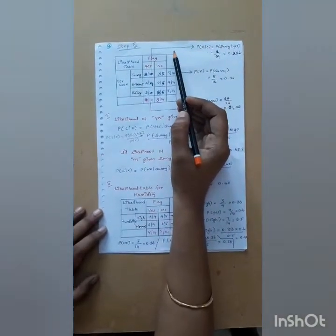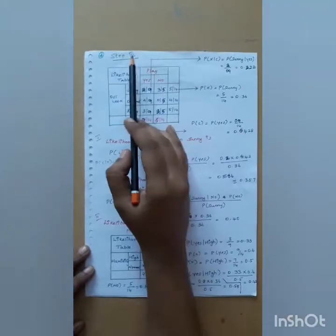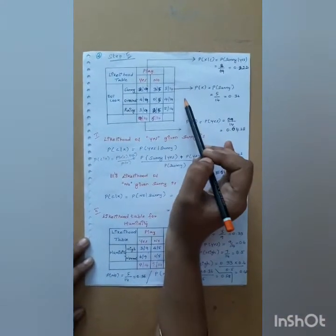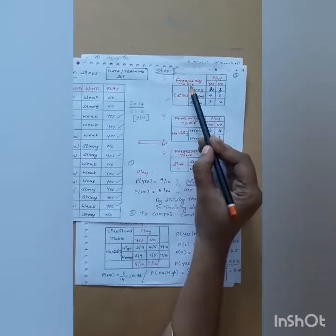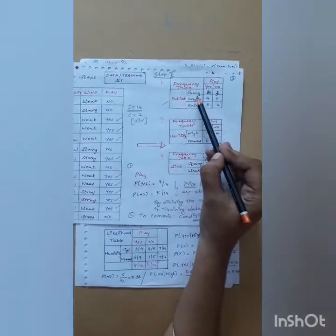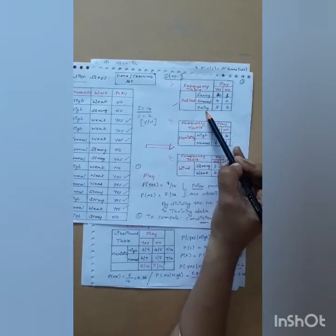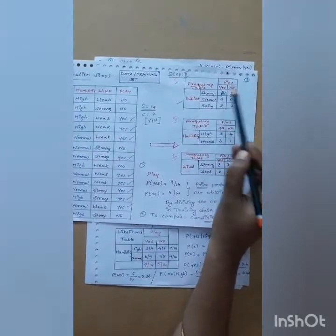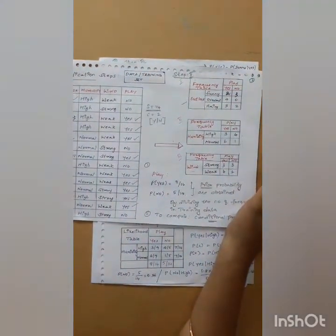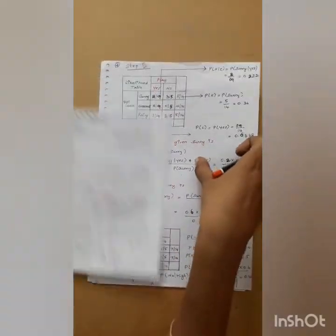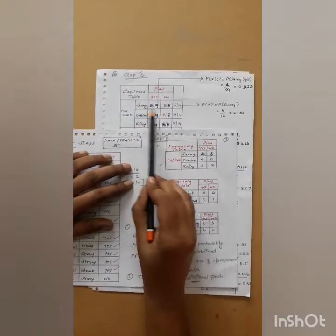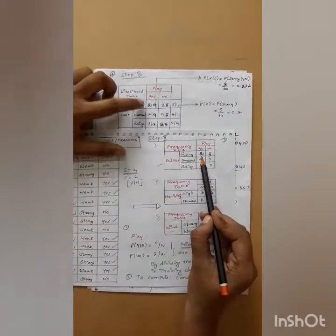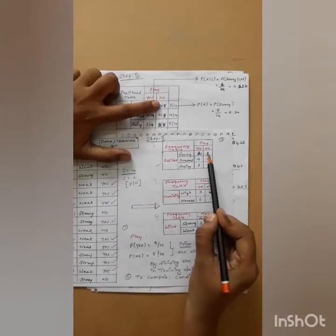In the previous step we computed the frequency table, so in step 3 we are going to compute the likelihood table. For the frequency table, outlook has sunny, overcast, and rainy. We need to compute the likelihood — how many yes and how many no. For sunny, it is 2 out of 9 for yes and 3 out of 5 for no.